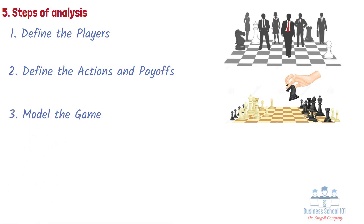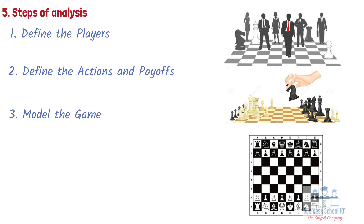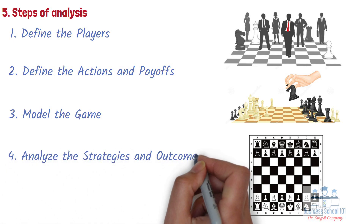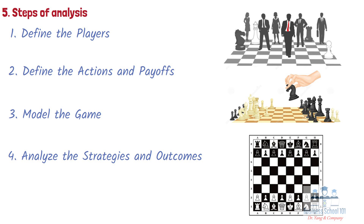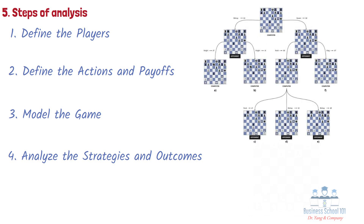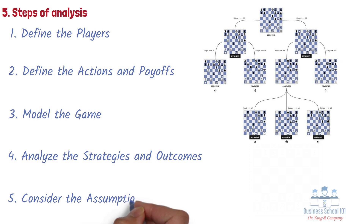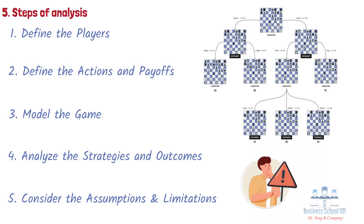Third, model the game using a game theoretic framework, such as a payoff matrix or a decision tree. The game model represents the strategic interactions between the players and the possible outcomes based on their actions. Fourth, analyze the optimal strategies and outcomes for each player once the game is modeled. Fifth, consider the assumptions and limitations of the game theoretic model, including the ethical implications of the optimal strategies and outcomes and whether they align with societal values and norms.